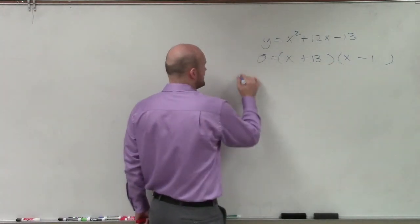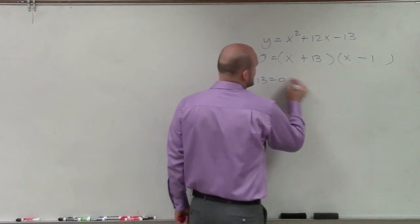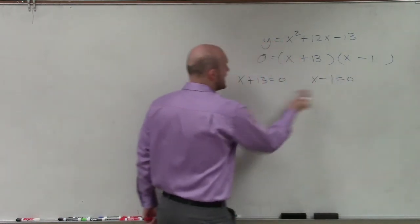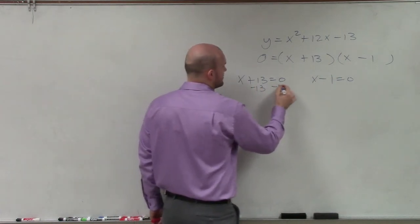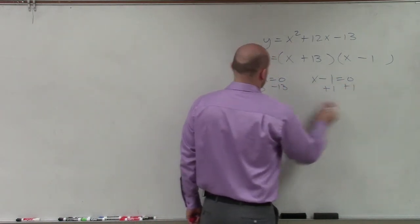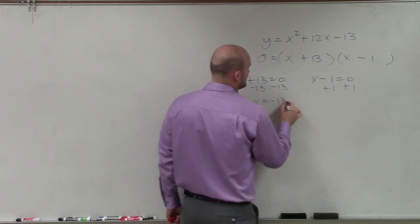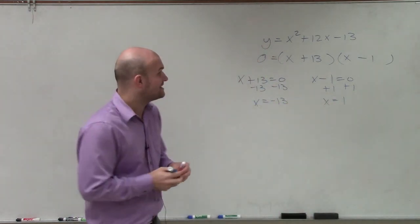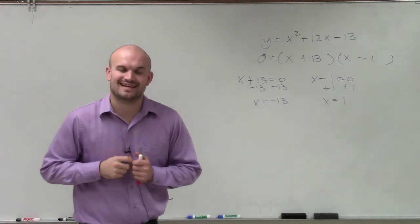And now I can use my zero product property. So I can say x plus 13 equals 0 and x minus 1 equals 0. Now, solve for x. So I subtract 13 on both sides, add 1 on both sides. Therefore, x equals negative 13, and x equals 1. So there you go, ladies and gentlemen. That is how you solve your quadratic. Thanks.